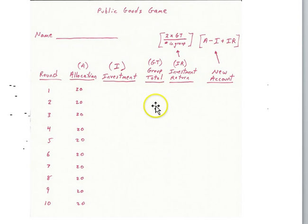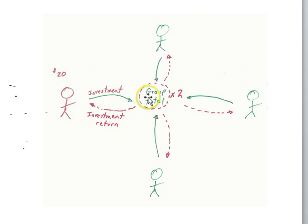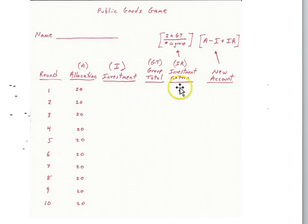The group total is simply the total amount invested by all four players. Investment return is calculated by this formula up here. We double the group total, and then we divide by the number of players. There will be four players.